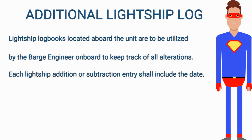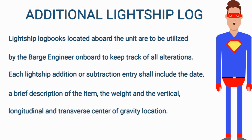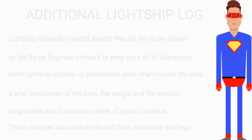Lightship log books located aboard the unit are to be utilized by the barge engineer onboard to keep track of all alterations. Each lightship addition or subtraction entry shall include the date, a brief description of the item, the weight, and the vertical, longitudinal and transverse center of gravity location. These changes also include the drill floor, cantilever and legs.